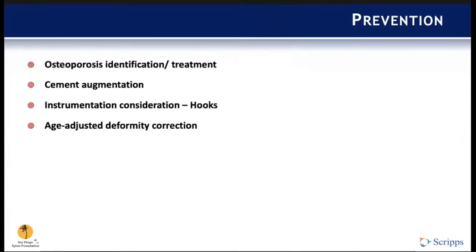How do we prevent PJK? Several modalities have been studied, including osteoporosis identification and treatment, consideration of cement augmentation and vertebroplasty, instrumentation considerations such as using hooks rather than pedicle screws, and considering age-adjusted deformity correction. The gold standard for osteoporosis identification remains DEXA scan, but several studies describe utilizing CT scan Hounsfield units to identify patients preoperatively since most will already have a preoperative CT during planning.